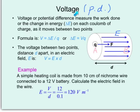Voltage, or PD, potential difference, measures the work done or the change in energy, delta E, on each Coulomb of charge as the charge moves between two points. The formula is, based on the description here, V equal to change in energy divided by charge, or rearranged formula like this. The voltage between two points, A and B, distance D apart,